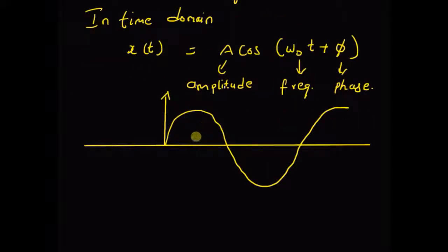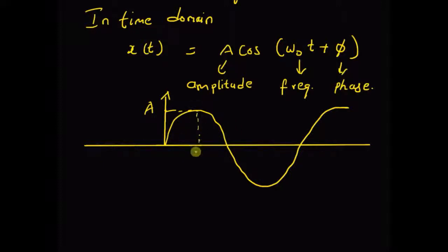Now, assuming that this curve represents a sinusoidal signal, the amplitude A is the maximum value of this signal. That is, the value of the signal at omega-naught t plus phi equal to zero — when this sum is zero, cos of zero is one, so the value of the signal is A. So at this point, the value of the signal is A, that is the amplitude.